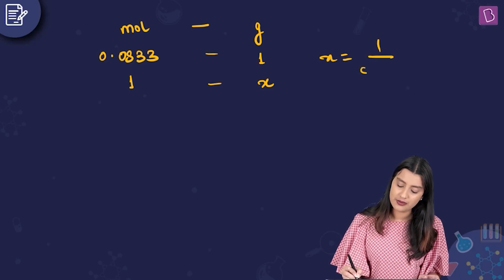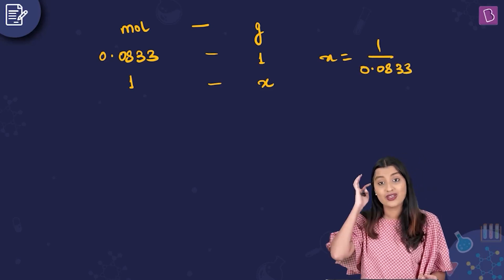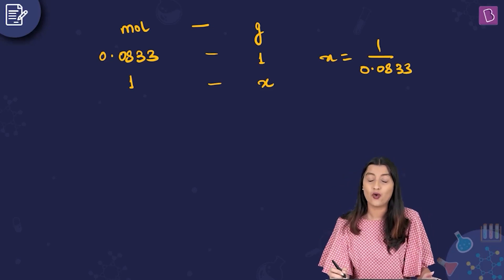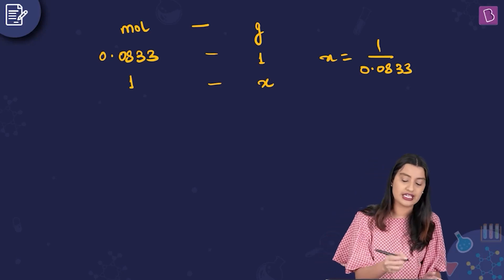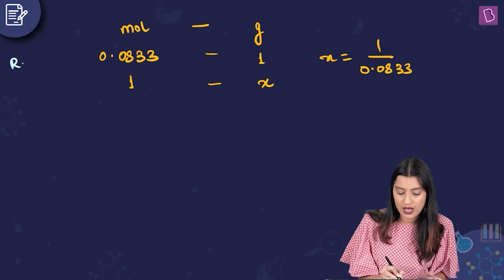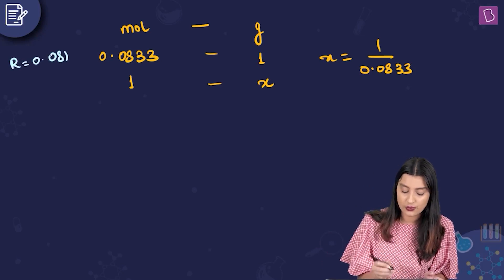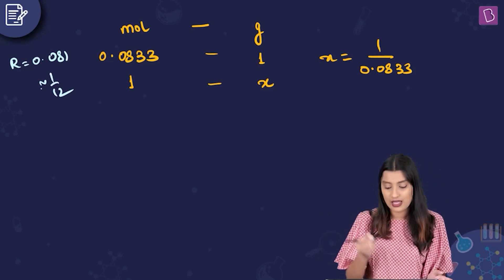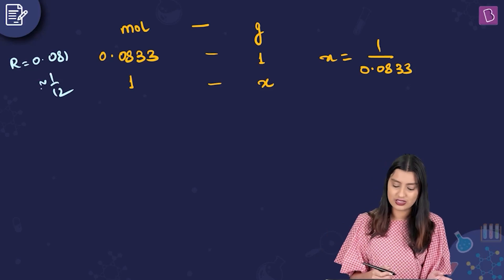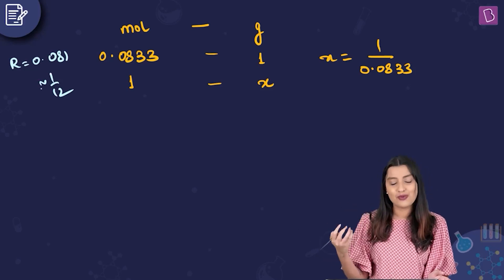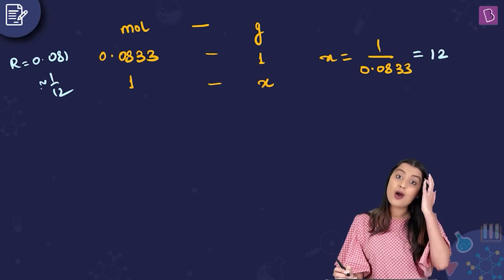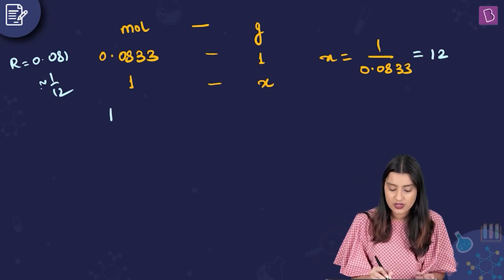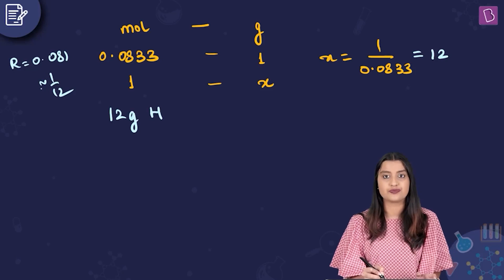So x = 1 / 0.0833. Recall that when R = 0.0812, we approximate it to 1/12. I'll do the same approximation here: 1 / 0.0833 ≈ 12. So in 1 mole of the compound, there are 12 grams of hydrogen.